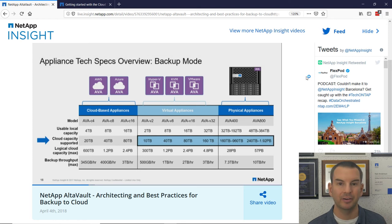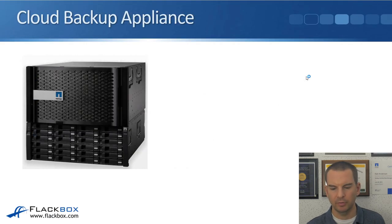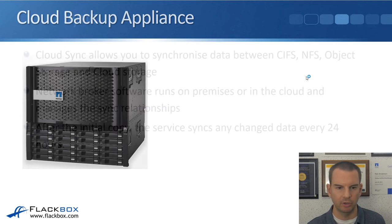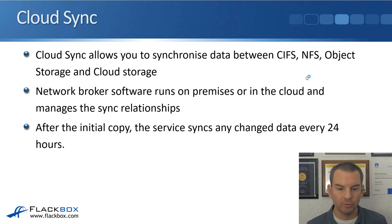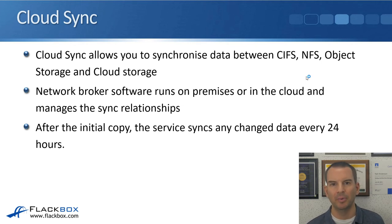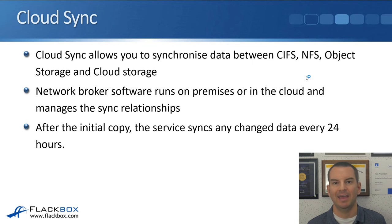Next is CloudSync. CloudSync allows you to synchronize data between CIFS, NFS, object storage, and cloud storage. Network broker software runs on-premises or in the cloud and manages the sync relationships. CloudSync is not like Cloud Backup — it's not specifically for backups and doesn't cache a local copy. CloudSync is a more basic service really just used for moving your data around. After the initial sync, the service will then sync any changed data every 24 hours, so you can copy data from one location to another and keep them in sync afterwards.